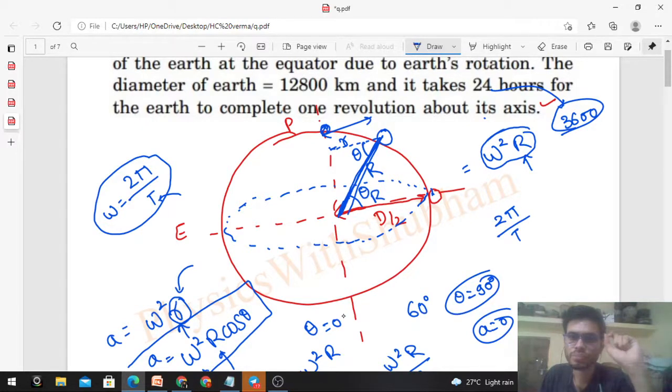An interesting case will be when theta equals 90 degrees - then your acceleration becomes zero because the particle is situated at the axis of rotation itself. So the circle in which it rotates will have radius zero - meaning actually it won't rotate in any circle.